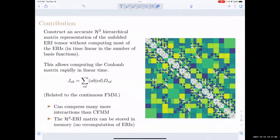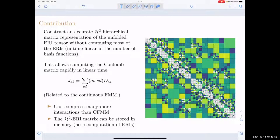This talk is about a method for constructing a hierarchical matrix representation of the unfolded ERI tensor — the electron repulsion integral tensor unfolded into a matrix. On the right is a typical picture of an H2 hierarchical matrix. The colored blocks are low-rank blocks, possibly of different ranks and different sizes, and the white blocks are dense blocks stored in dense form.